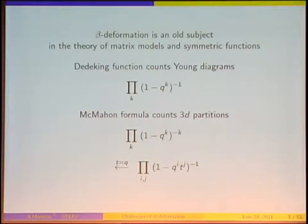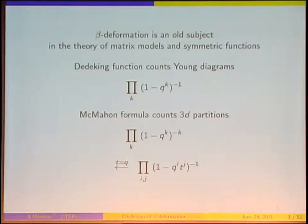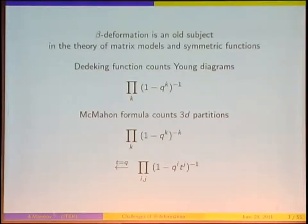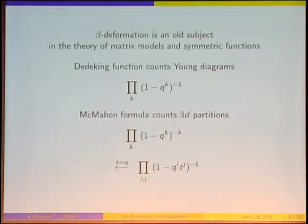In the MacMahon formula there is an essential difference from the Dedekind function: the power is strange. There is an obvious way to get rid of this strangeness — just switch to another generating function by introducing an additional parameter t. Then when t goes to q, we obtain the MacMahon function. Therefore it is natural that the problem should have a deformation in the direction of this t variable. Looking at this very simple problem, you already understand that q is not enough and that there should be another direction of deformation.